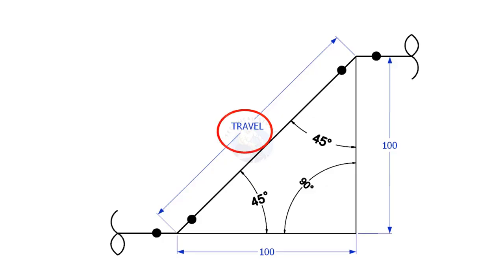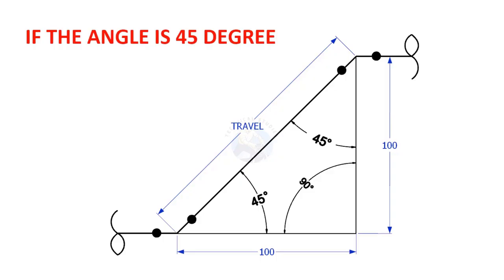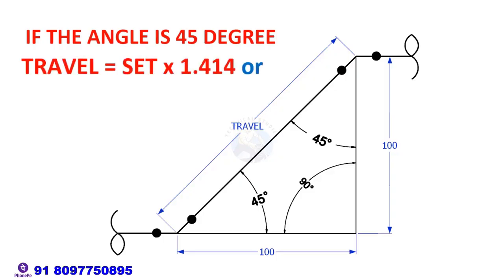What is the travel length if the set or run is given and the angle is 45? Including angle is 45 degrees. Travel length is set multiplied by 1.414 or run length multiplied by 1.414. Here the 1.414 is a constant.